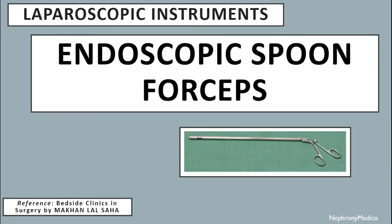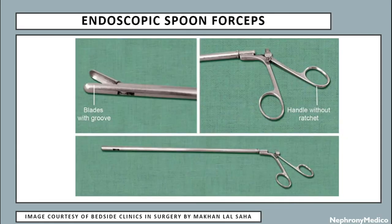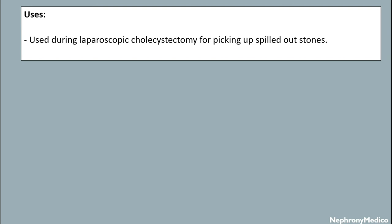Let's talk about endoscopic spoon forceps, which is a laparoscopic instrument. This is a picture showing the endoscopic spoon forceps. It has blades with a groove and a handle without ratchet. Uses: it is used during laparoscopic cholecystectomy for picking up spilled stones.